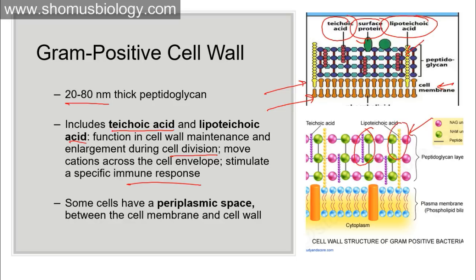Both teichoic and lipoteichoic acids are important for maintaining and expanding the cell wall as the bacterium grows before cell division. Some cells also have a periplasmic space — the gap between the peptidoglycan layer and the cell membrane. For some bacteria this space is larger than others, and we specifically call those bacteria out for having a large periplasmic space.